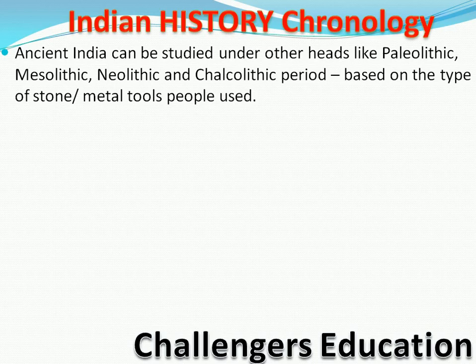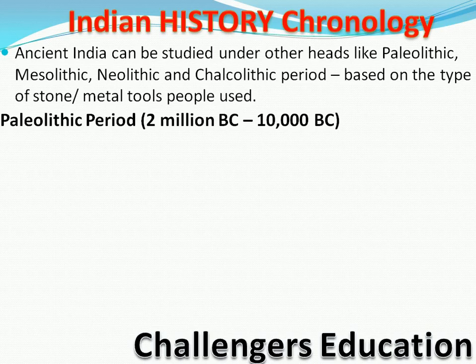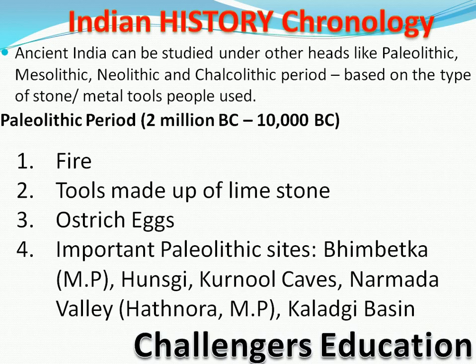Paleolithic — 'paleo' means bahut purana, 'lithic' means patthar. Paleolithic period matlab 2 billion BC to 10,000 BC tak. Isme insanon ki khoj thi — fire. Insanon ne limestone ke tools banaye the aur ostrich ke eggs bhi mile hain is time ke. Important paleolithic sites hain jaise Bhimbetka (MP mein), Hunsgi, Kurnool Caves, Narmada Valley — yeh sab sites hain.